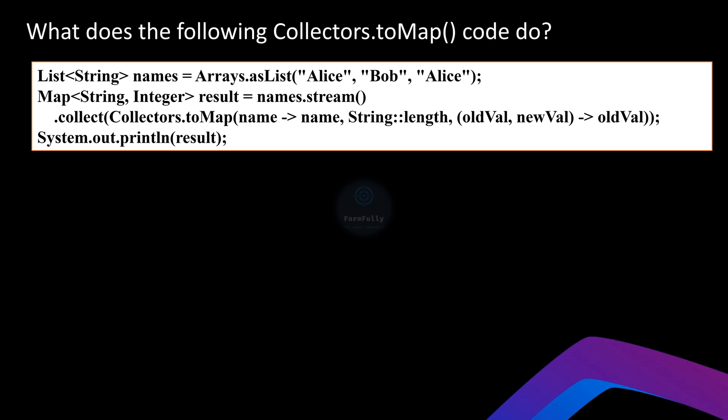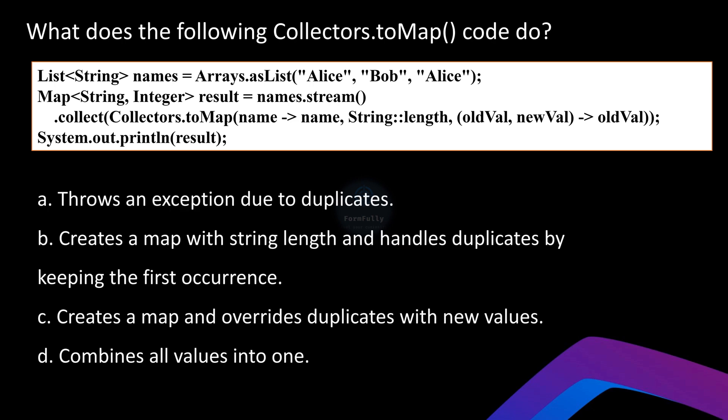Let's move on to the next question: what does the following `Collectors.toMap` code do? We'll break down the code snippet. You can pause the video and come up with your answer. First step is creating a list of names — we have Alice, Bob, and another Alice. Notice that Alice appears twice, which will be important later when we deal with duplicates. Second step is converting the list to a stream.